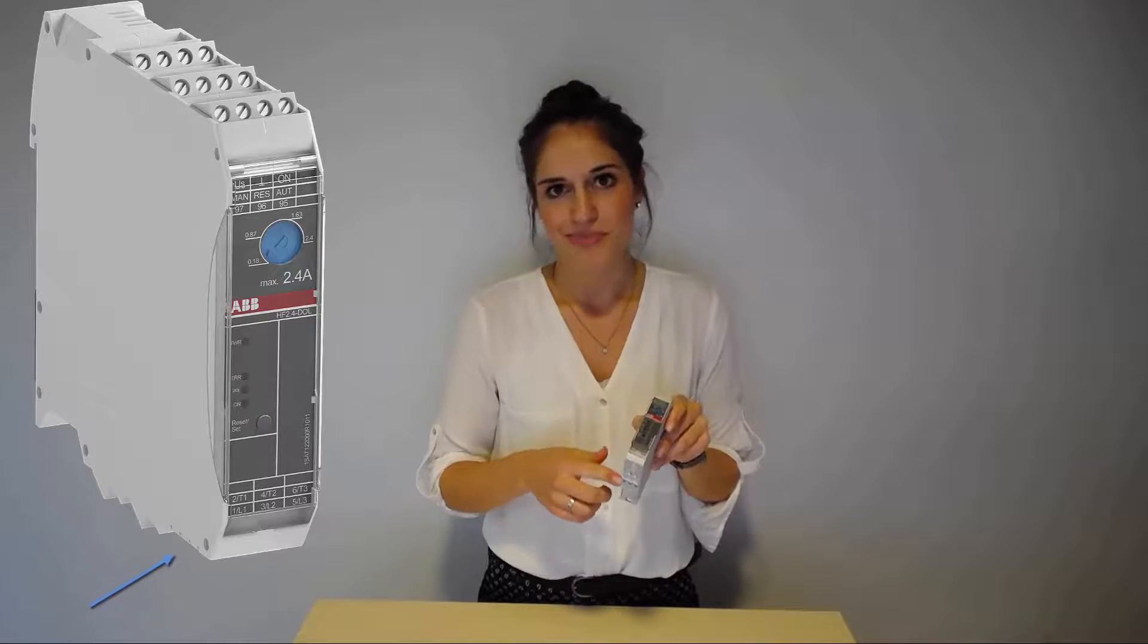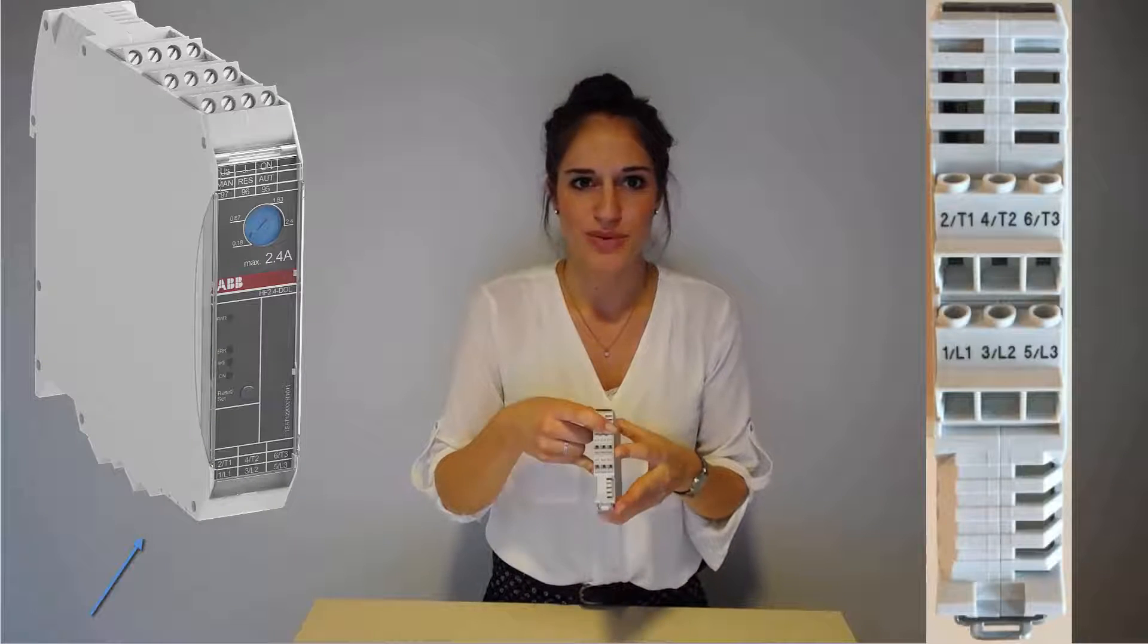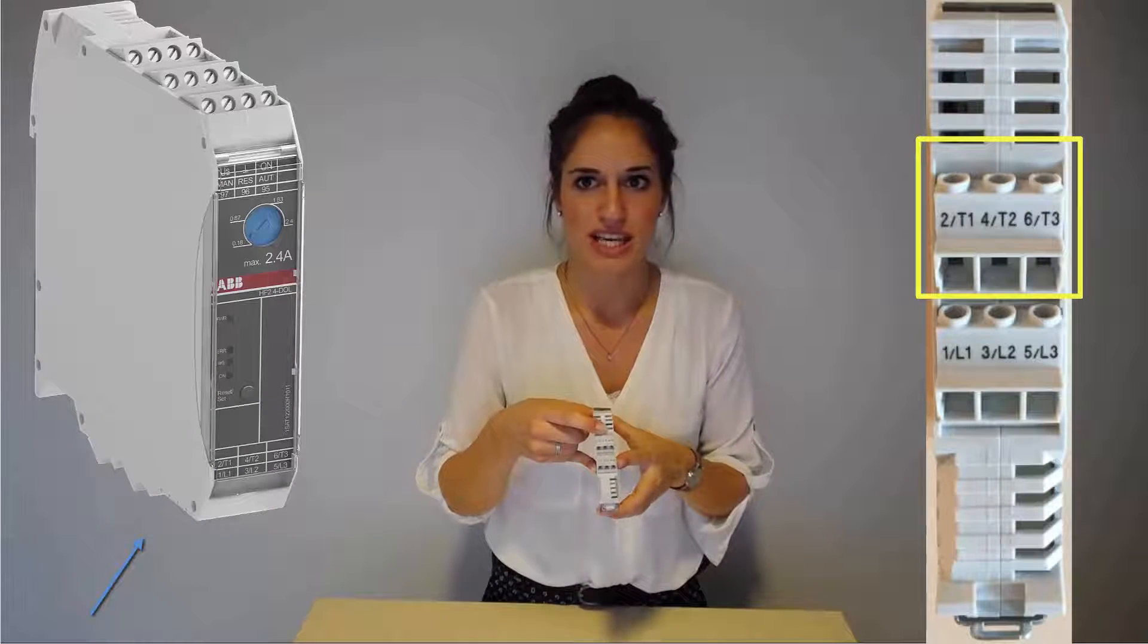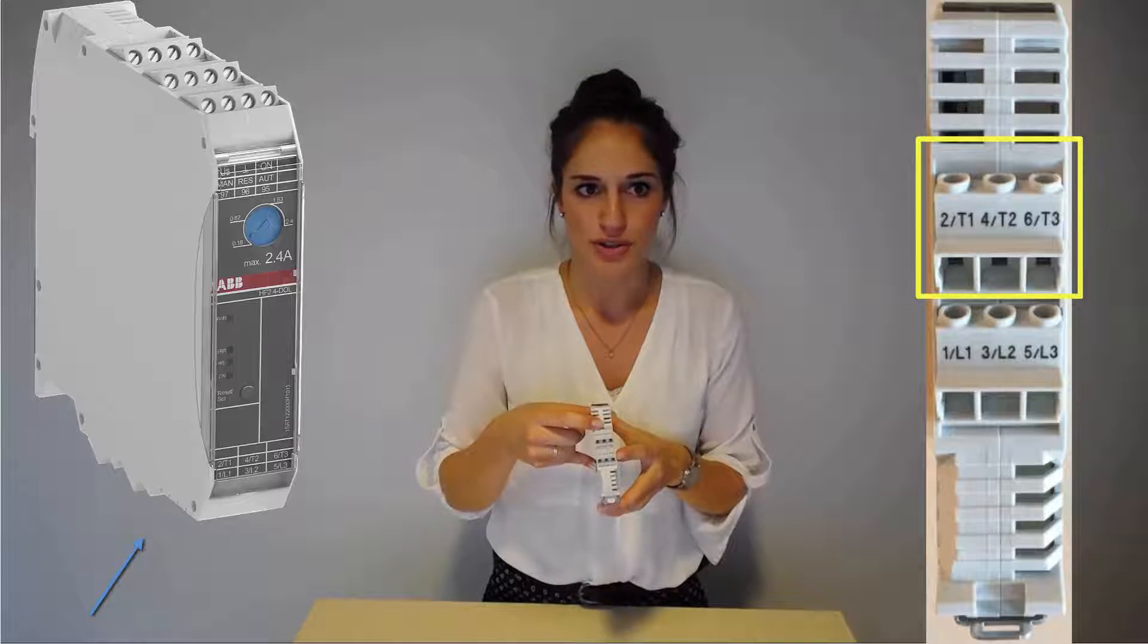Motor control terminals can be found on the top side of each device, whereas the three-phase power supply for the motor is realized on the bottom. Terminals T1, T2 and T3 are the output voltage terminals. They have to be connected with the motor.